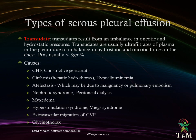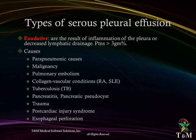Exudative effusions are the result of inflammation of the pleura or decreased lymphatic drainage; proteins are more than 3 grams per cent. Causes include parapneumonic causes, malignancy, pulmonary embolism, collagen vascular conditions, tuberculosis, pancreatitis, trauma, post-cardiac injury syndrome, and esophageal perforation.